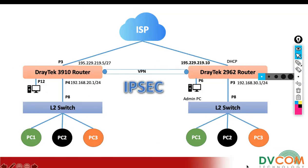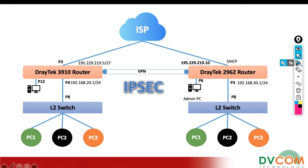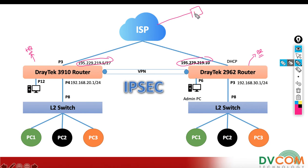For example, we have a Vigor 3910 router which is in HQ, and we have a 2962 which is in branch. The concern is that both locations have a static public IP, which means they can be accessed from outside. For example, if I connect my PC on the internet and enable HTTP or HTTPS access for these public IPs, I can access these devices directly from anywhere in the world — but usually it's not recommended.